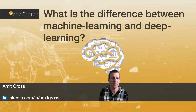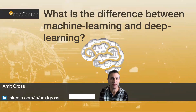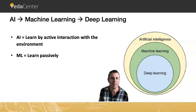Hi everyone. My name is Amit Gross, and today we're going to talk about the difference between machine learning and deep learning. As you can see in this diagram, deep learning is a subset of machine learning, which is a subset of artificial intelligence.